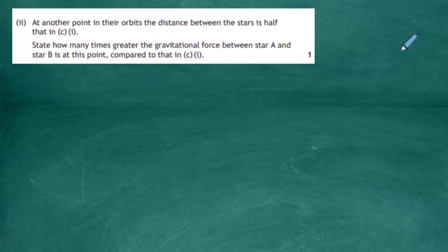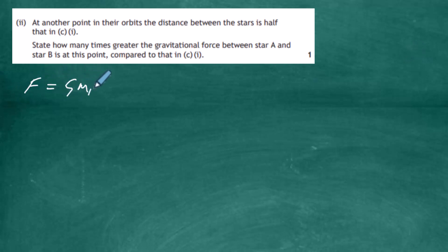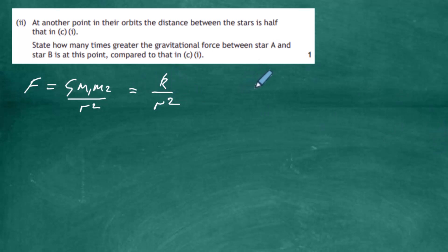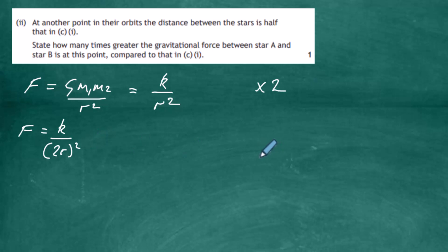Part c(ii): at another point in their orbits the distance between the stars is half that in part c(i). We need to state how many times greater the gravitational force is. Looking at F = Gm₁m₂/r², since G, m₁, and m₂ are all constant, F is proportional to a constant over r². If we double the distance, F = k/(2r)² = k/4r², so doubling the distance quarters the force.